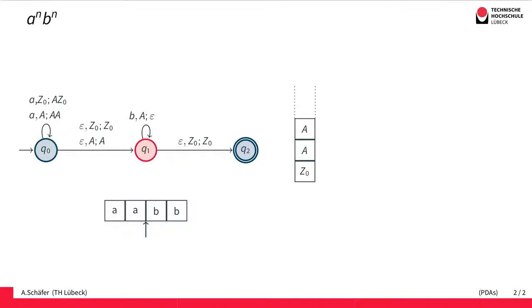Then we change state. In the second state Q1, we pop A's for each B we read from the input. Finally, after we've consumed the whole input, we see a marker—this Z0 that marks the bottom of the stack—and we've found it again.